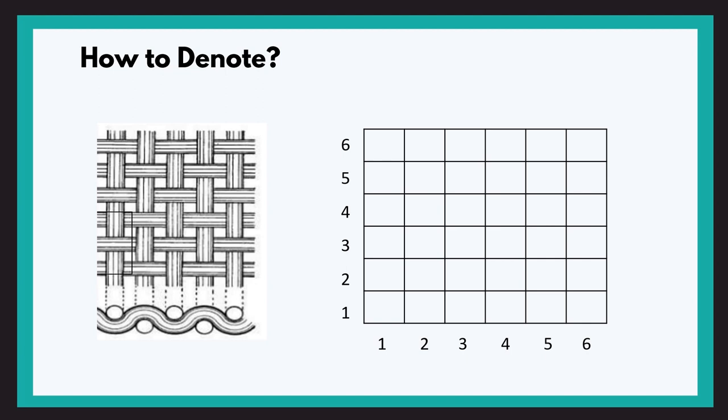Let us make a table and focus on the movement of the first warp thread. We can see it is moving over the first weft. Whenever a warp is above the weft we mark it with a cross, and whenever the weft is above the warp we leave it blank. So the first warp moves above, below, above, below, and above the successive weft threads — giving us a cross, blank, cross, blank, cross pattern.